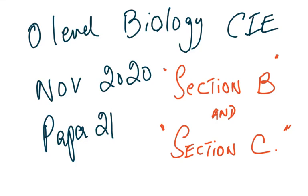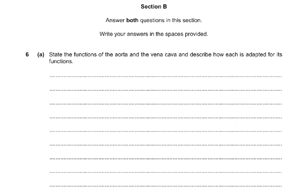This is the O-level Biology November 2020 Paper 2-1, and we are going to discuss Section B and Section C. In Section B, you must answer both questions — there is no choice. The choice only applies to Section C.